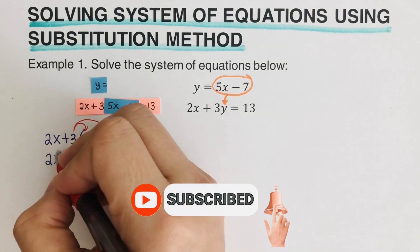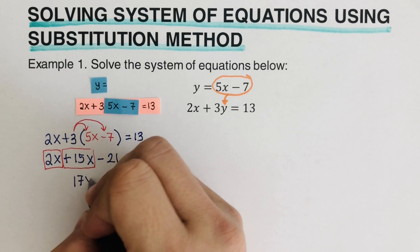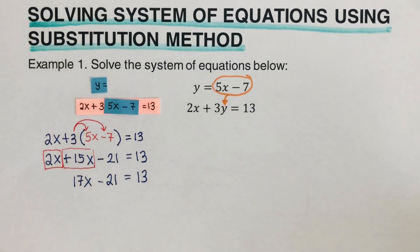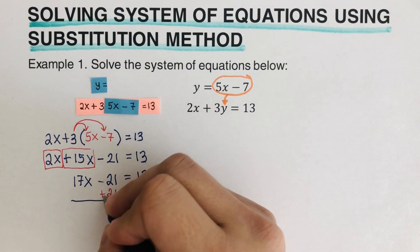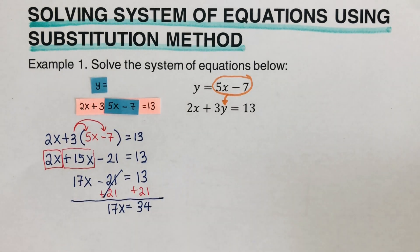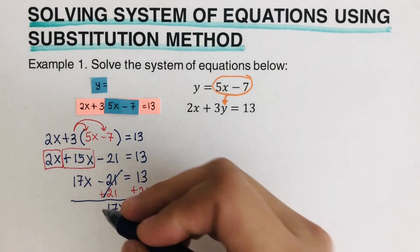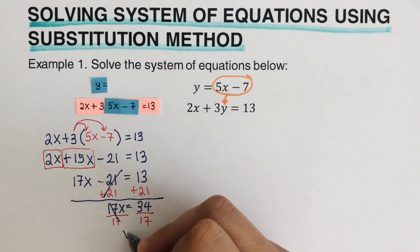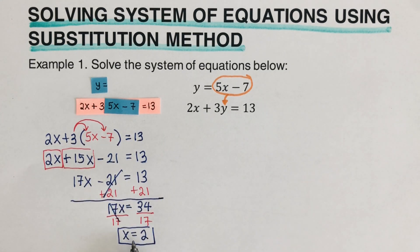From here we can combine like terms. We have 2x and 15x, and that would come out 17x, minus 21 equals 13. So then we want x by itself, so we add 21 to both sides. That gives us 17x is equal to 34. Then we're going to divide both sides by 17, and we are left with x is equal to 2. So the value of x is 2, and that is part of the third step — we solved for this equation.